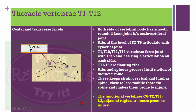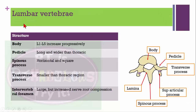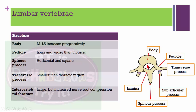In the lumbar vertebra, the body progressively increases from L1 to L5. The pedicle is very long and wider than the thoracic vertebrae. The spinous process is horizontal and square. The transverse process is smaller than in the thoracic region. The intervertebral foramen is large, but nerve impingement is more common in the lumbar region.